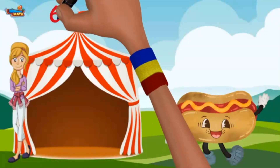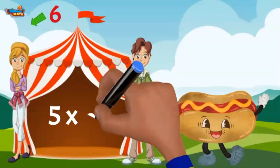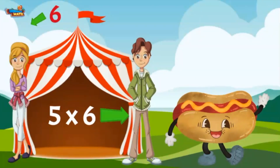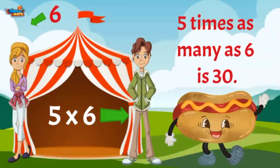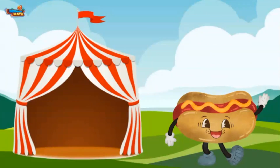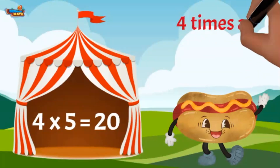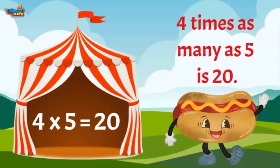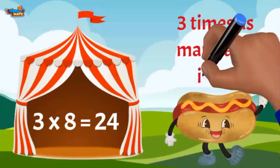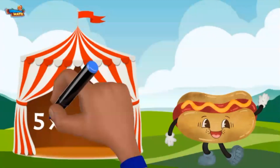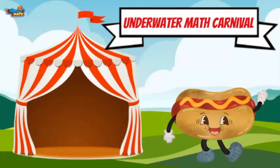The equation 3 times 8 equals 24 means that 3 times as many as 8 is 24. And the equation 5 times 6 equals 30 means 5 times as many as 6 is 30.